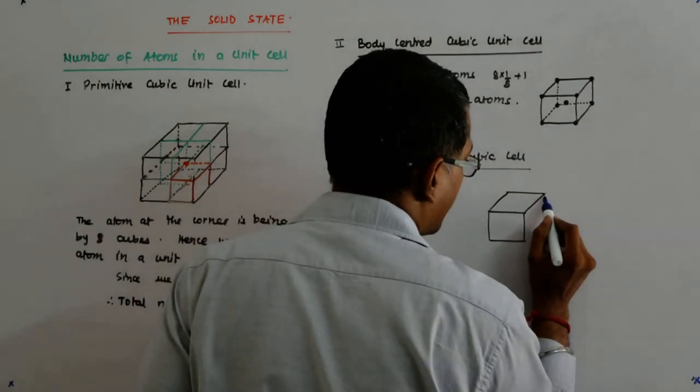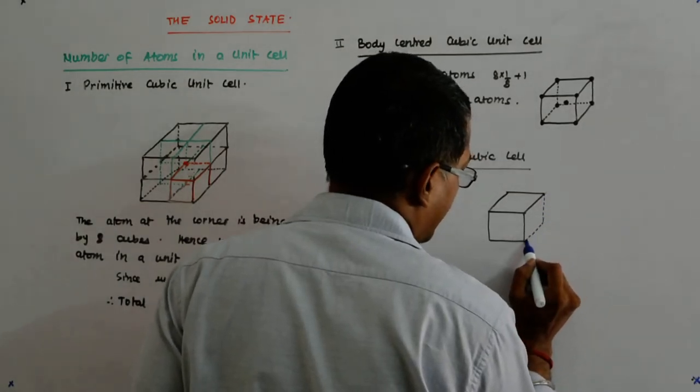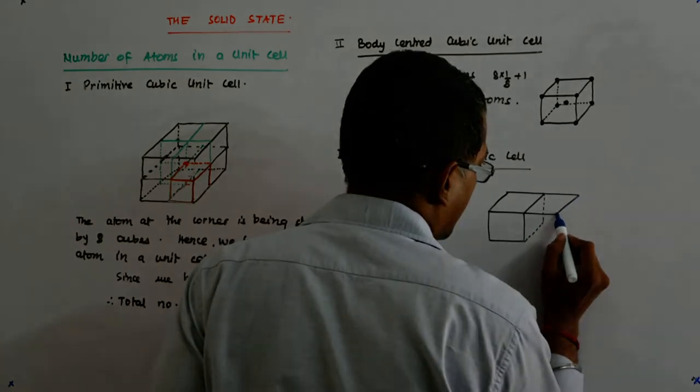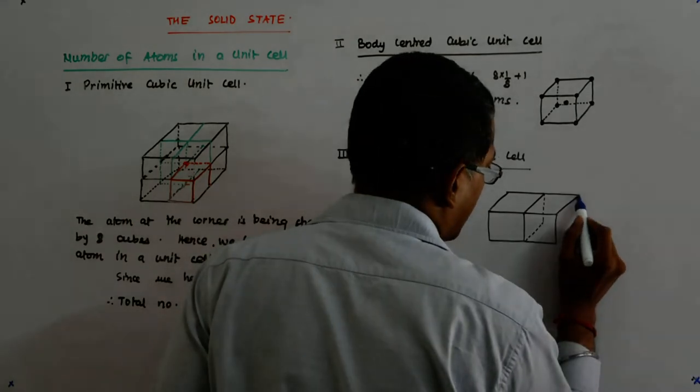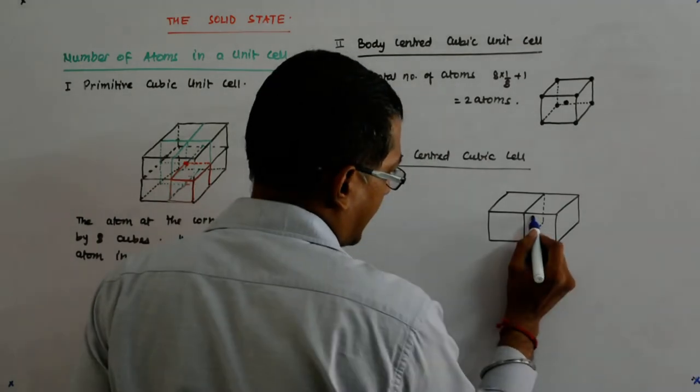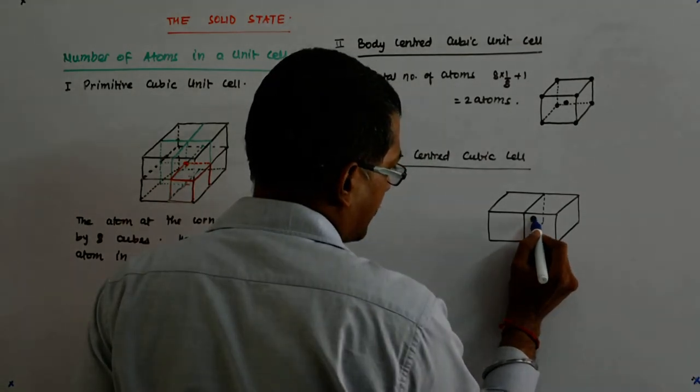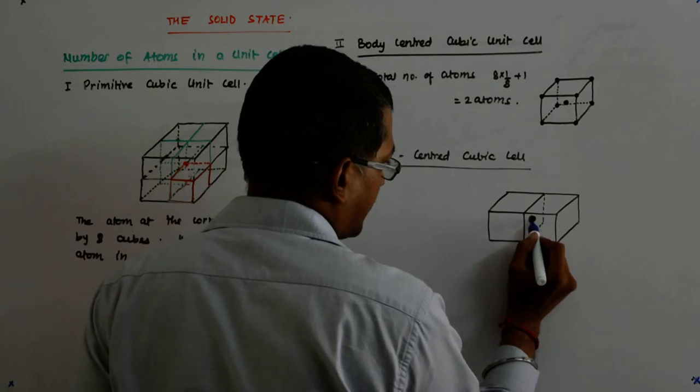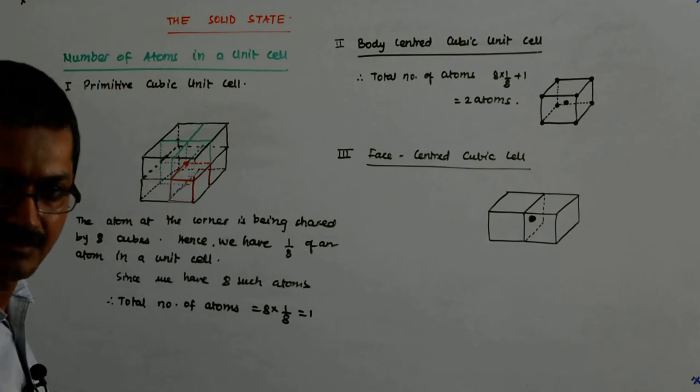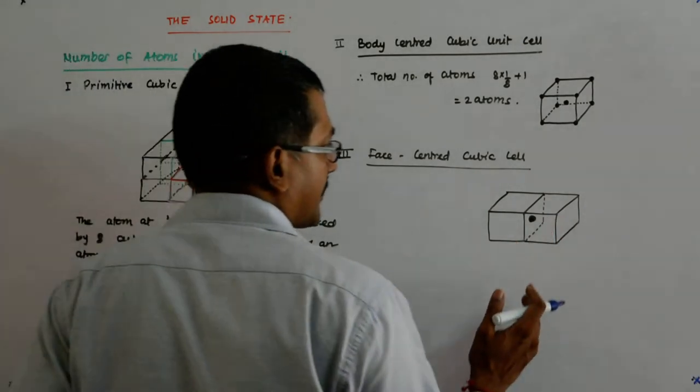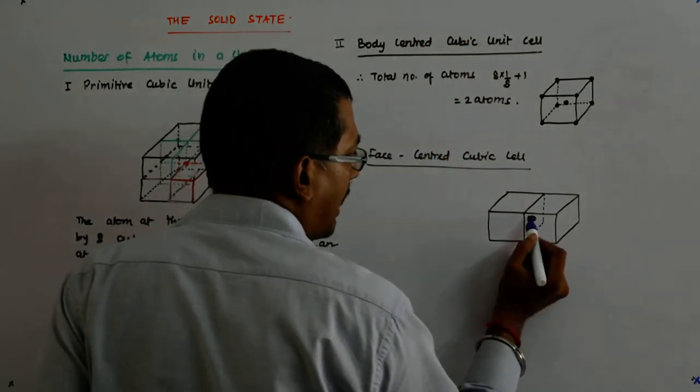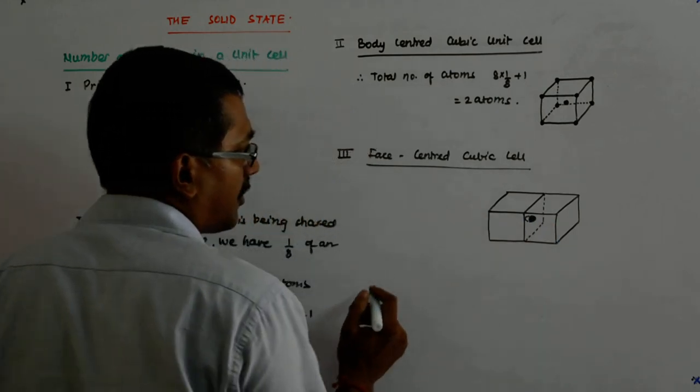And just beside it, I have another cube. And I have an atom out here. Okay? Then what happens? It kind of gets sliced into 2 by the face. Fine? If face is a plane, which it is, so if it cuts it, then half goes there and half of it falls here.